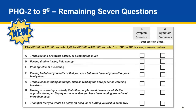The continuation of the resident mood interview to code the remaining seven questions is based on the answers provided for the first two. As this is new instruction for SNF providers, let's review that logic. If both D0150A1 and D0150B1, column 1 coding, are coded as a 9, or both D0150A2 and D0150B2, column 2 coding, are coded as a 0 or a 1, you will end the PHQ interview and not continue to ask the remaining seven questions. Otherwise, continue the interview.